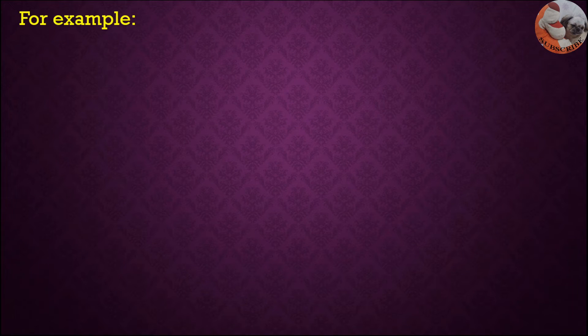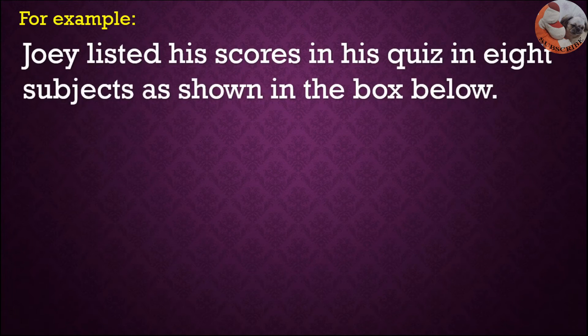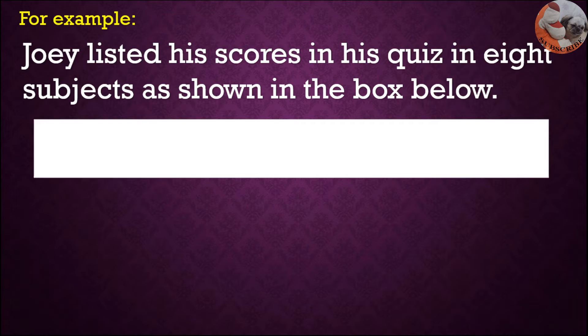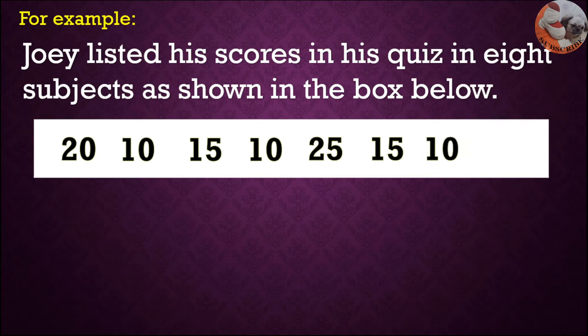For example, Joey listed his scores in his quiz in 8 subjects as shown in the box below. He got scores of 20, 10, 15, 10, 25, 15, 10, and 25.